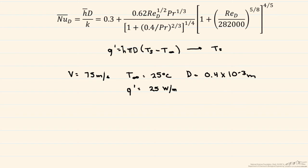So flowing over the cylinder, we have air in crossflow that has a velocity of 75 meters per second, and that air is at a bulk temperature of 25 degrees C. The diameter of our rod is 0.4 times 10 to the minus 3 meters, and this heat transfer per unit length is equal to 25 watts per meter.